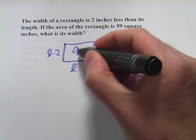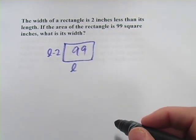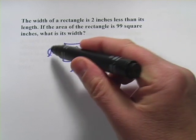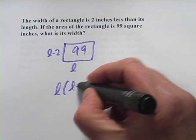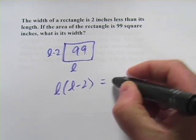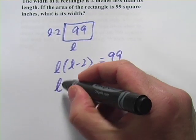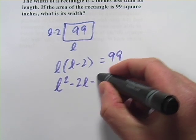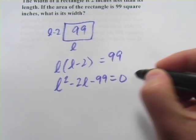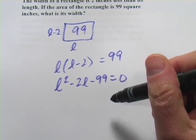And the area is 99. So we can set this up pretty easily. The area is the length times the width. So it's L times L minus two. And that equals 99. We've already got our quadratic here. So this is L squared minus 2L and I'll subtract the 99.